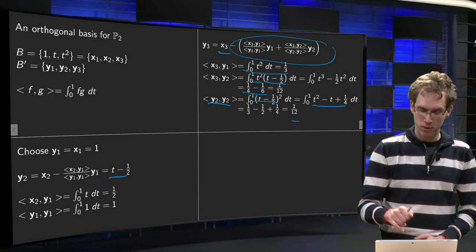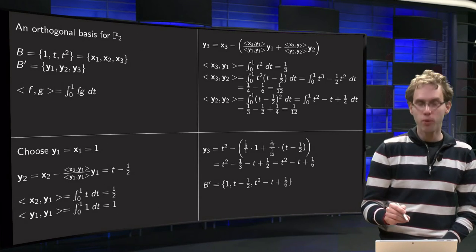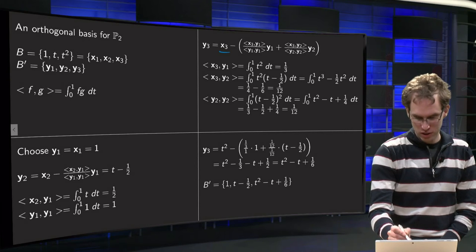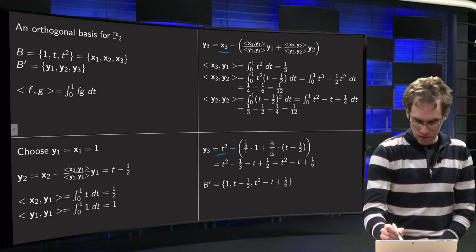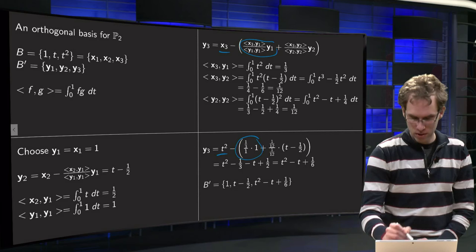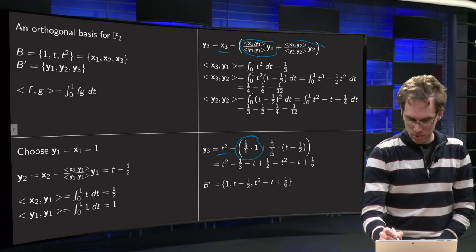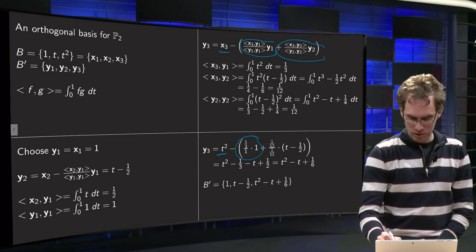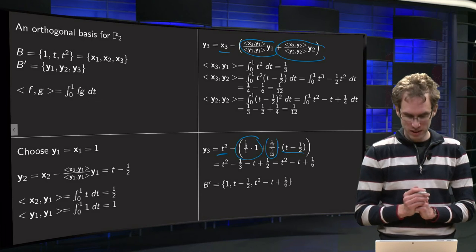And then we plug in all these numbers. So what do we get? t squared minus 1 over 3 over 1 times 1 plus this term, both of these inner products were 1 over 12 times y2, so t minus one half. So what do we get?